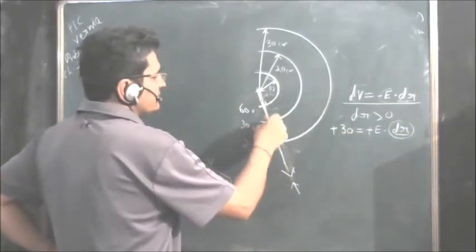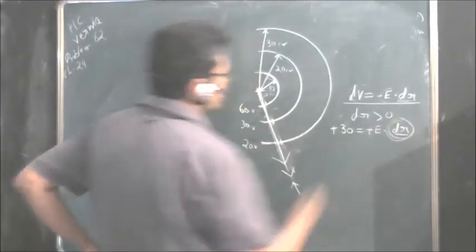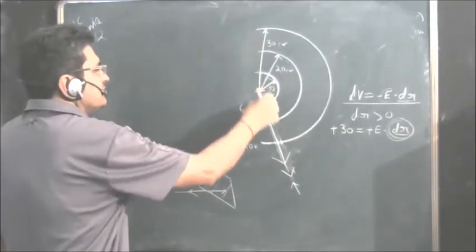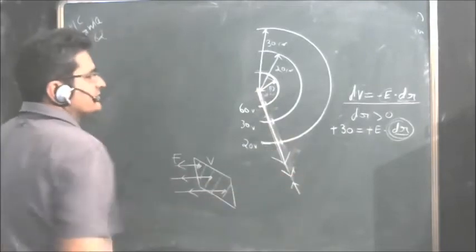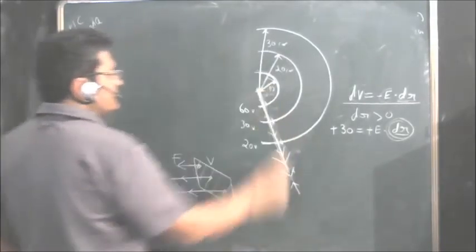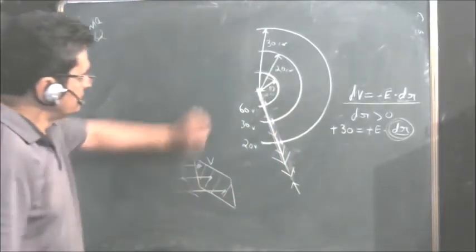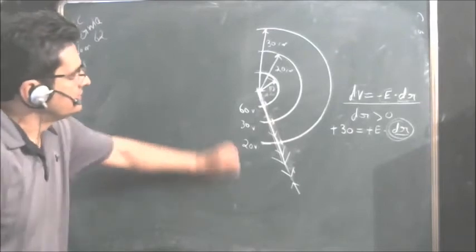E is coming positive means E will be along the direction of dr because dr is the reference point. We are moving outwards, we are taking this as positive. So direction of electric field will be perpendicular to the potential surfaces and directed outwards. Now what is the value of E that we have to find?